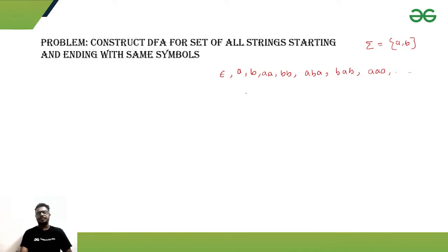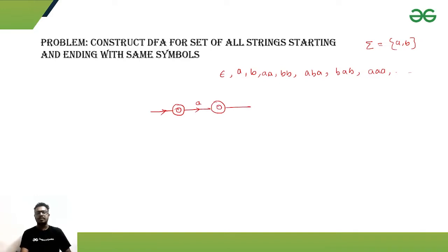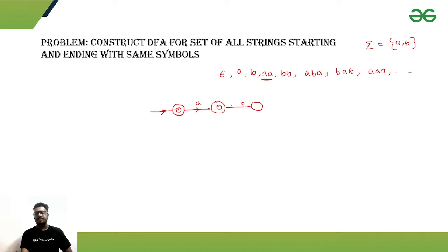Where the starting and ending conditions will by default be satisfied. So the initial state should also be the final state, because it is accepting null. And if it is getting a single symbol 'a', it should accept. If it is starting with 'a', then the ending symbol should also be 'a'.